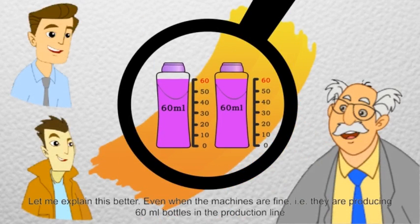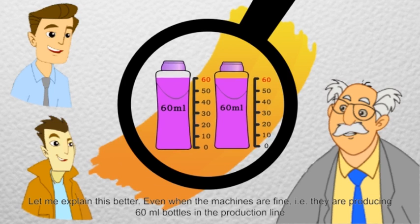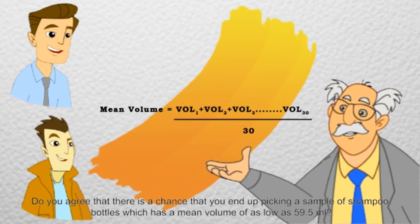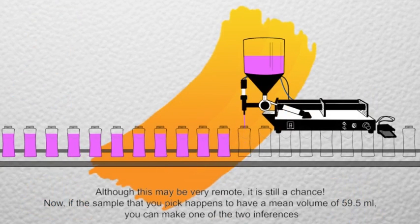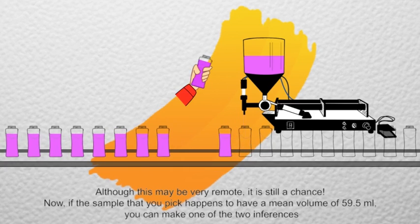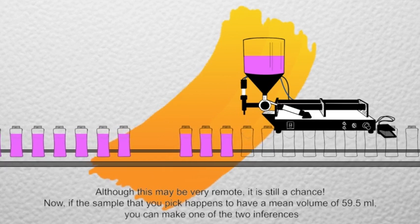Let me explain this better. Even when the machines are fine, that is, they are producing 60 ml bottles in the production line, do you agree that there is a chance that you end up picking a sample of shampoo bottles which has a mean volume of as low as 59.5 ml? Although this may be very remote, it is still a chance.